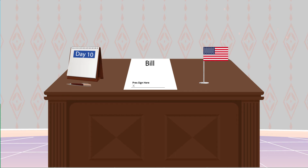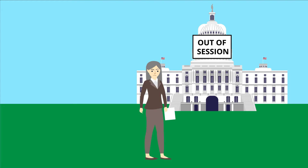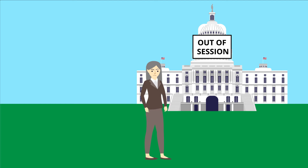If the president does not sign the bill within 10 days, excluding Sundays, they have vetoed it and it goes back to Congress. This action is called a regular veto. However, there is an exception: if Congress is no longer in session, then there is no time limit. The president just doesn't have to sign the bill and they have vetoed it. This type of veto is called a pocket veto and has been the subject of debate over the years.